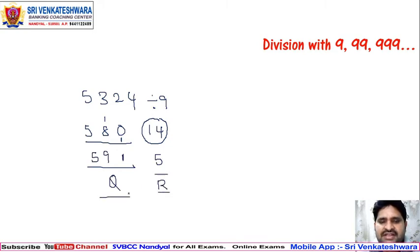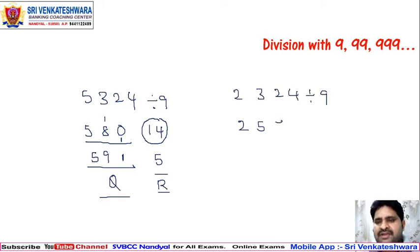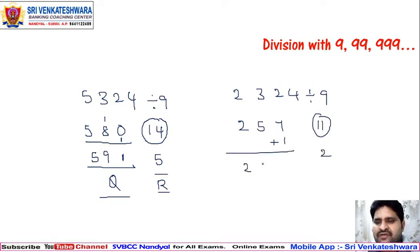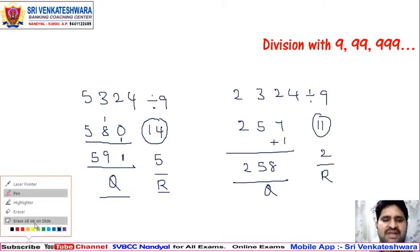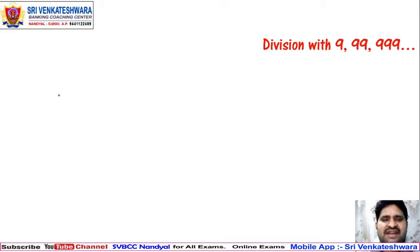Now take 2324 divided by 9. Directly write 2, then 2 plus 3 is 5, 5 plus 2 is 7, 7 plus 4 is 11. Since 11 is the last value and it's more than 9, divide by 9 — it goes once with remainder 2. So add 1 to 257 to get 258 as the coefficient, and 2 is the remainder.